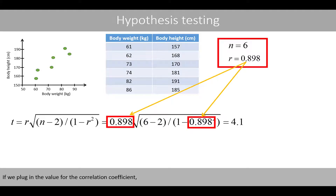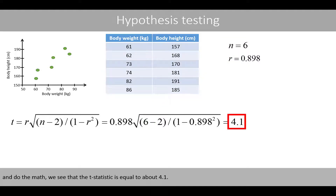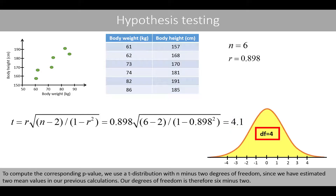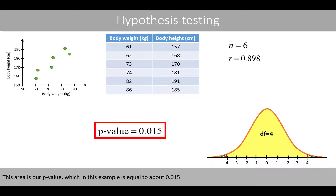If we plug in the value for the correlation coefficient and the sample size and do the math, we see that the t-statistic is equal to about 4.1. To compute the corresponding p-value, we use a t-distribution with n minus two degrees of freedom, since we estimated two mean values in the previous calculations. Our degrees of freedom is therefore six minus two equals four. Using software, we calculate the area to the left of negative 4.1 and to the right of positive 4.1 in a t-distribution with four degrees of freedom. This area is our p-value, which in this example is equal to about 0.015.